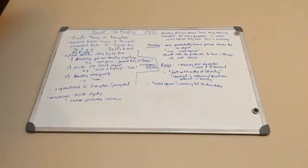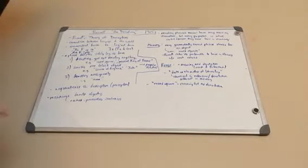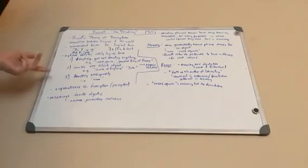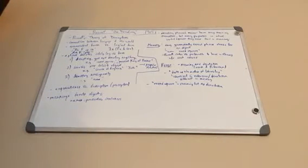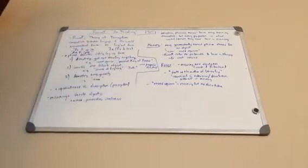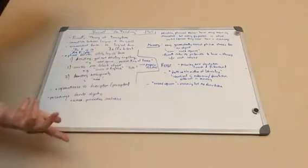Another way of denoting is denoting one definite object. Meinong says that this is the only way that meaning and denotation occurs — denoting one definite object. Like the queen of England, that denotes one specific lady. John denotes one specific man. That's what proper names do.